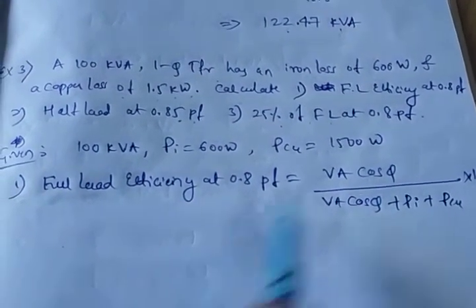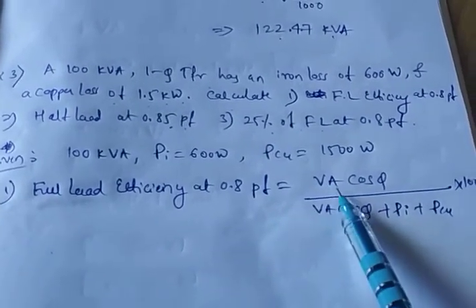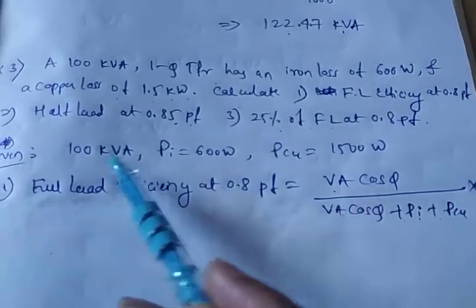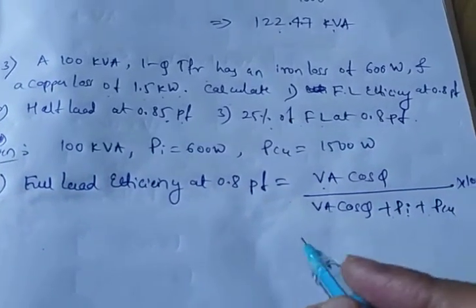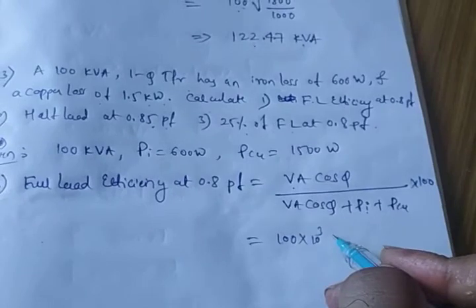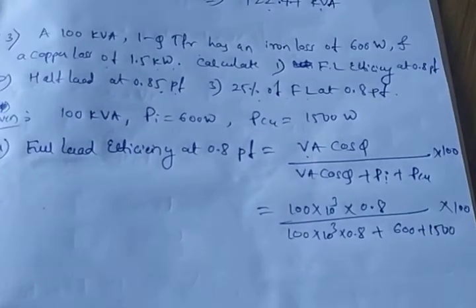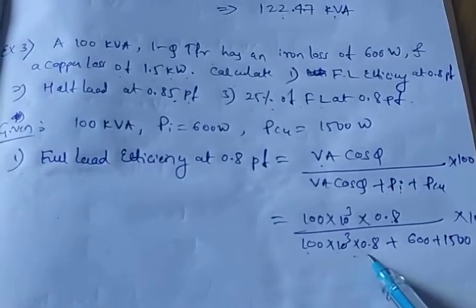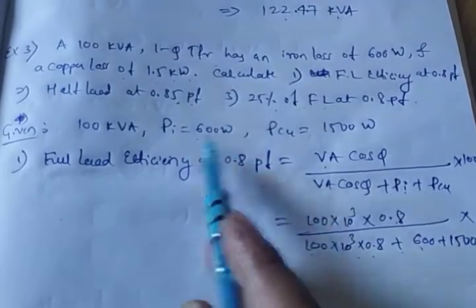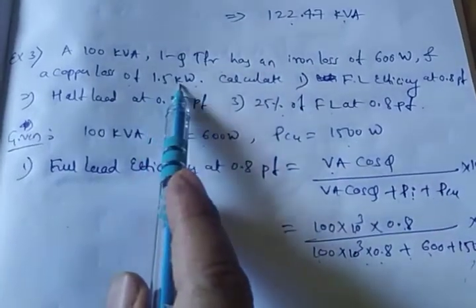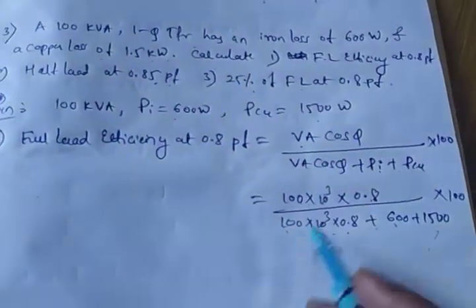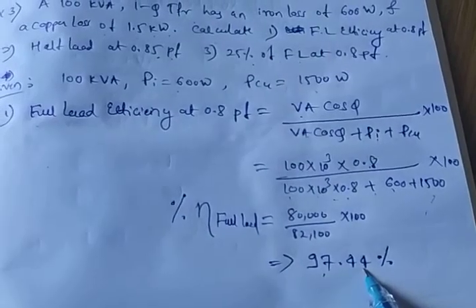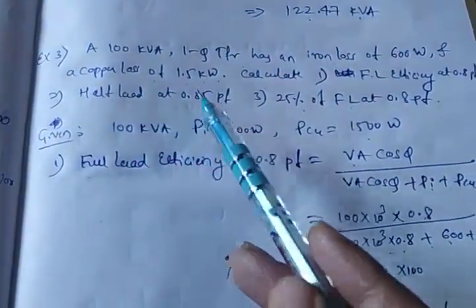The first part is full load efficiency at 0.8 power factor. The formula is: VA × cos φ divided by (VA × cos φ + Pi + Pcu) × 100. VA is 100 kVA, so substituting: 100×10³ × 0.8 divided by (100×10³ × 0.8 + Pi = 600 watts + Pcu = 1500 watts) × 100. The efficiency at full load is 97.44 percent.